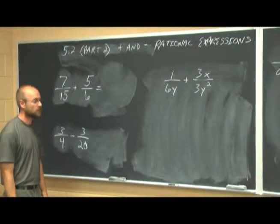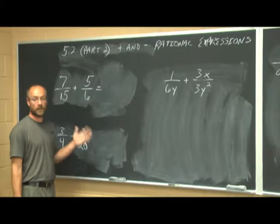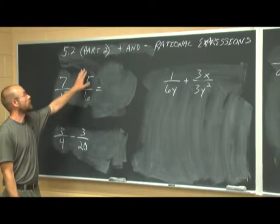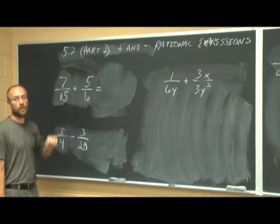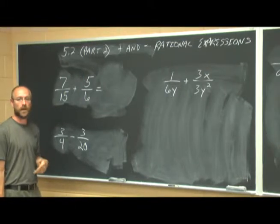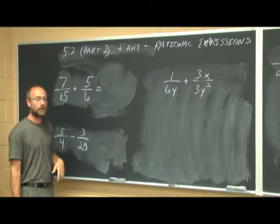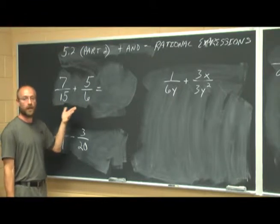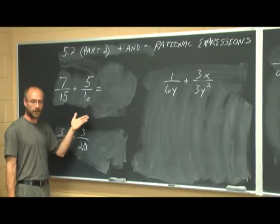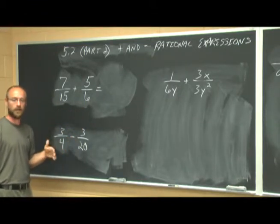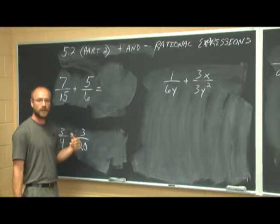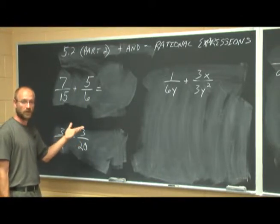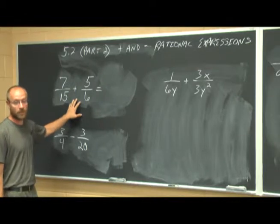Hello, and welcome to Bay College's Intermediate Algebra online lectures. This is part two of section 5.2, where we're dealing with adding and subtracting rational expressions. We're going to look at what we do when we have unlike denominators. We have to have a common denominator in order to add or subtract our rational expressions — they're nothing more than fractions. So let's take a look at some examples.